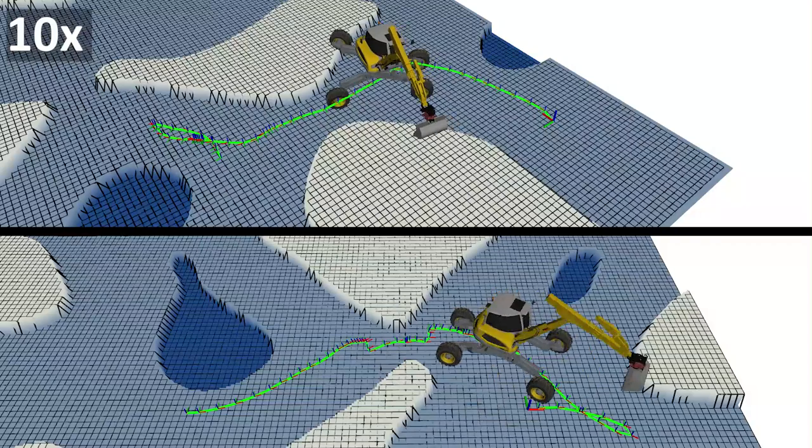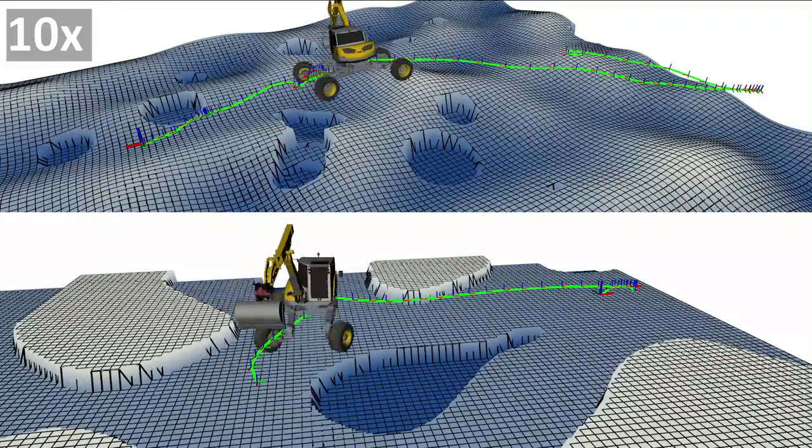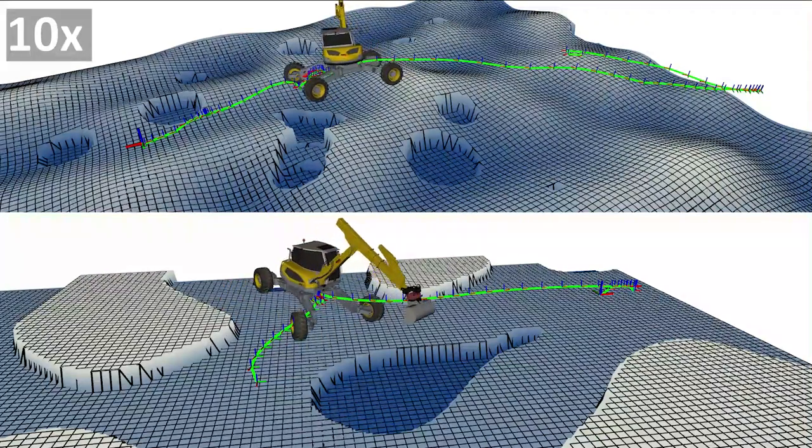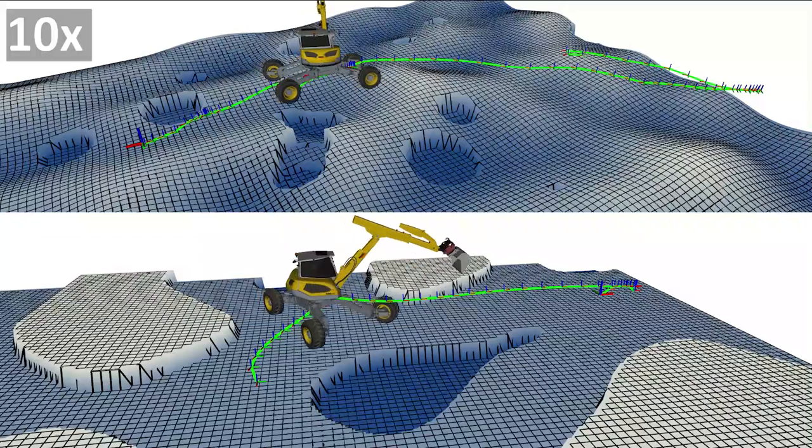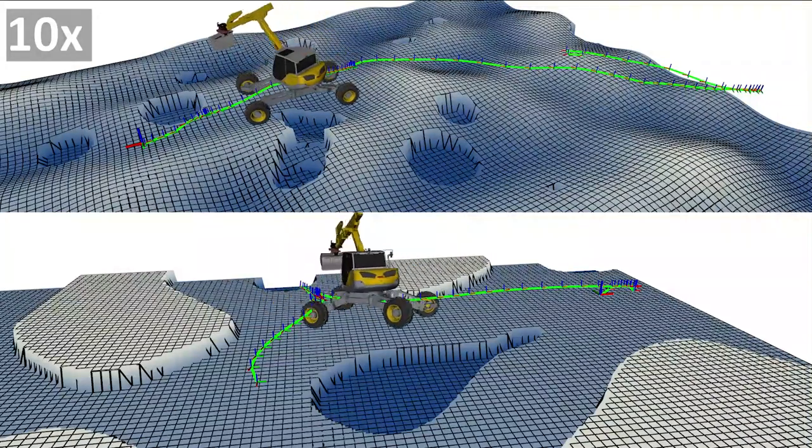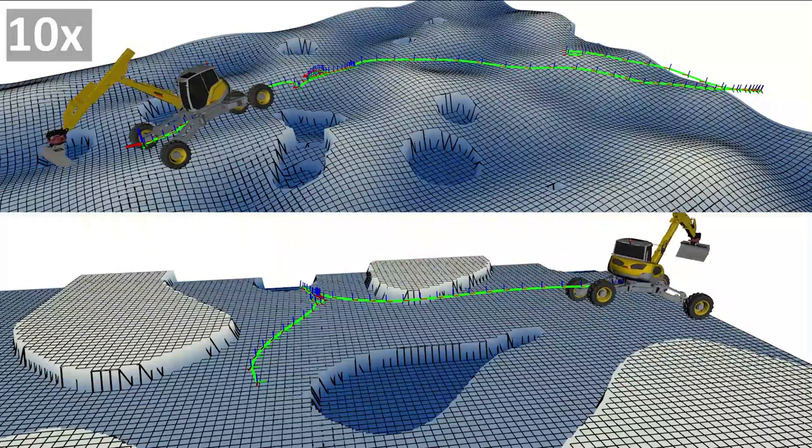Our approach's current limitation is the computation time required for trajectory optimization in the presence of long time horizons. Hence, the last motion shown does not fulfill all the system's constraints.